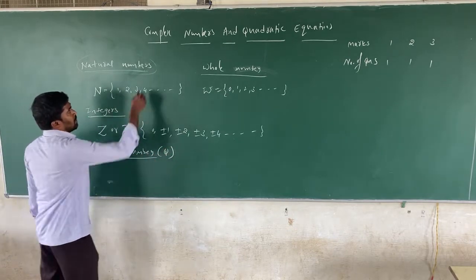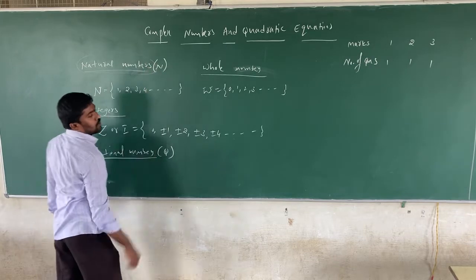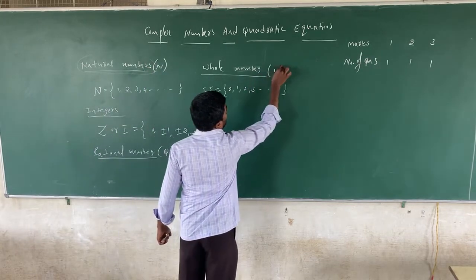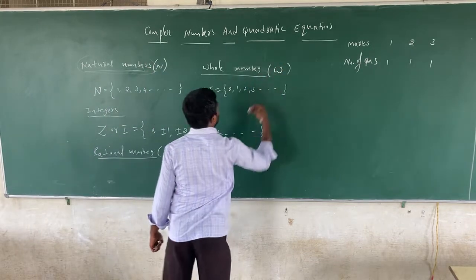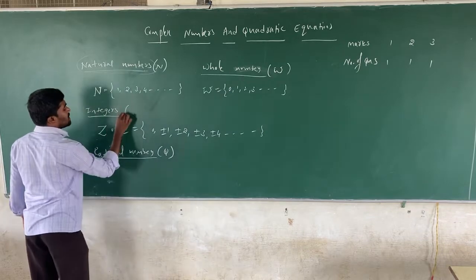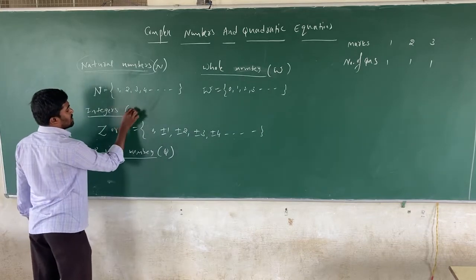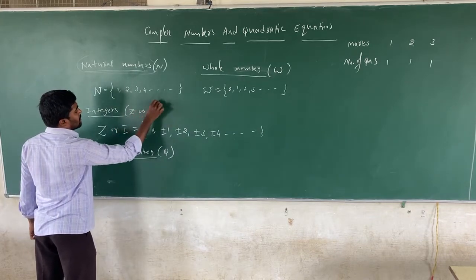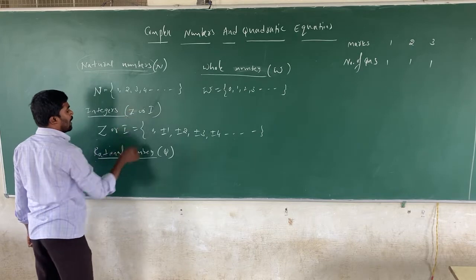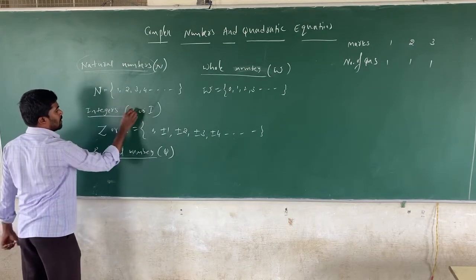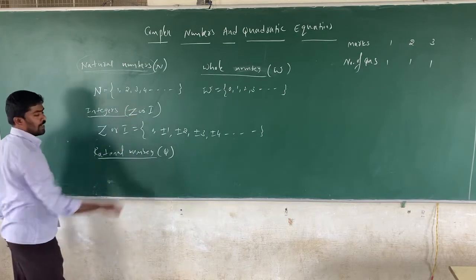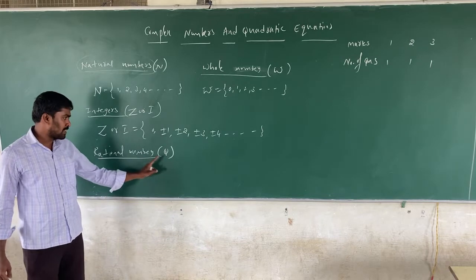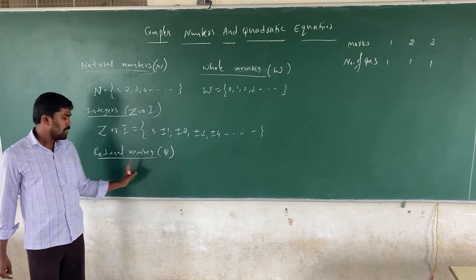What is the representation of natural numbers? N. What is the representation of whole numbers? W. What is the representation of integers? Z or I. What is the representation of rational numbers? Q.